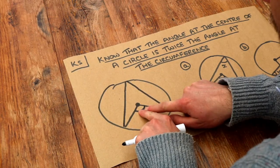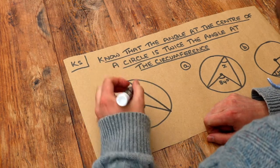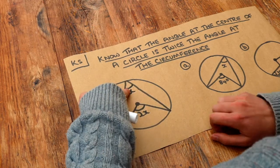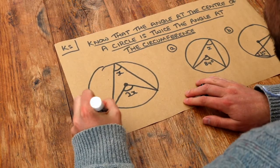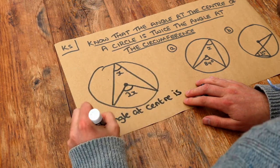then that angle at the centre is twice the angle at circumference. So this would be double that, or equivalently this would be half that. The angle at the centre of the circle is twice the angle at the circumference.